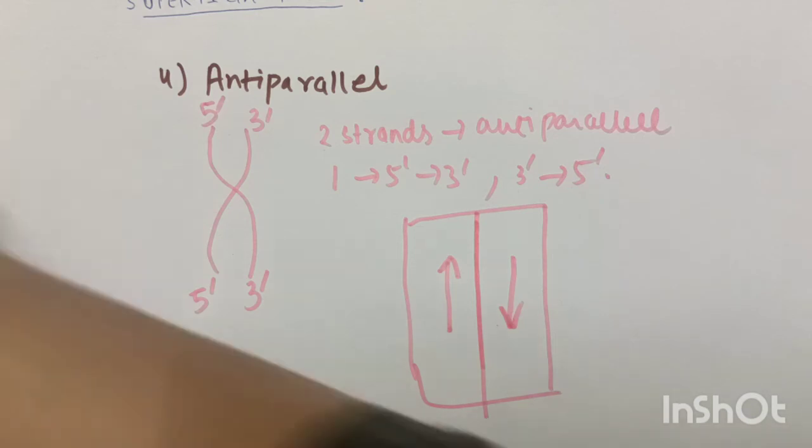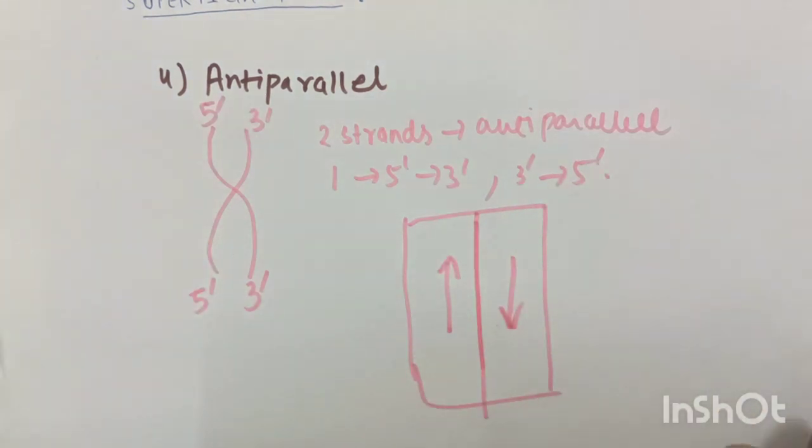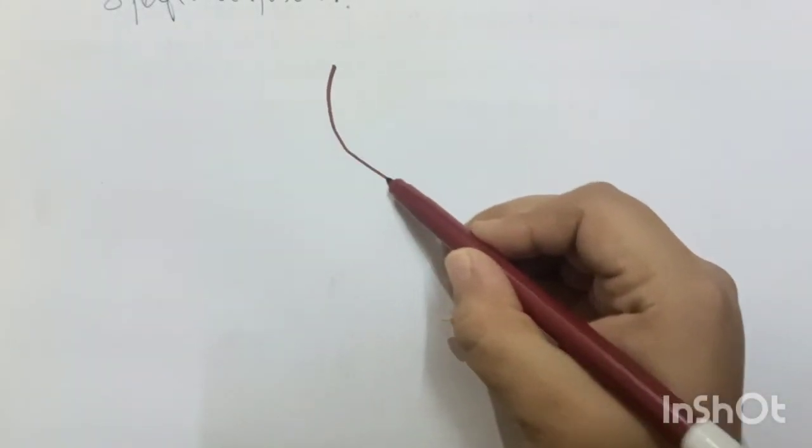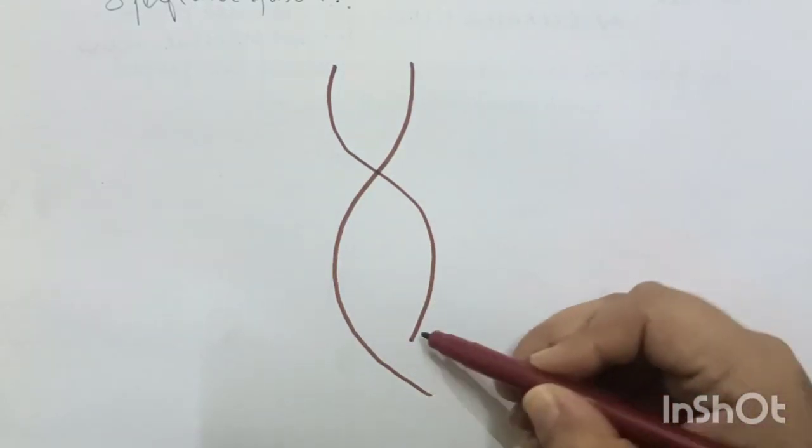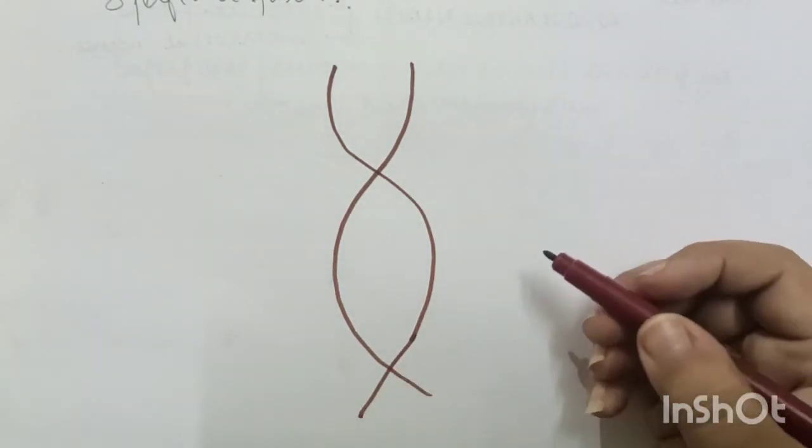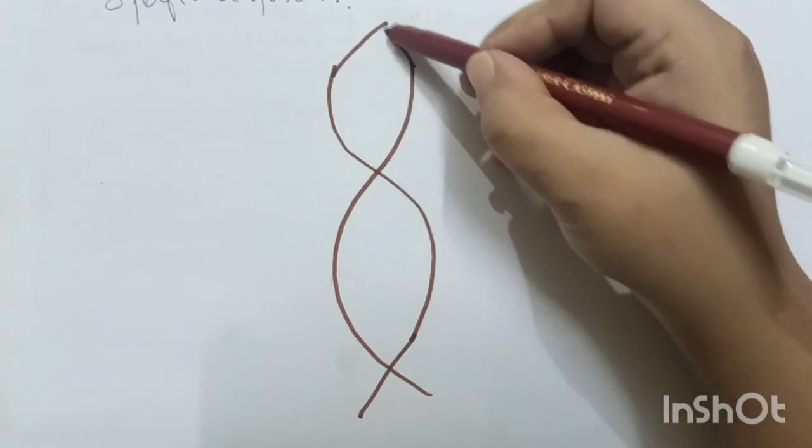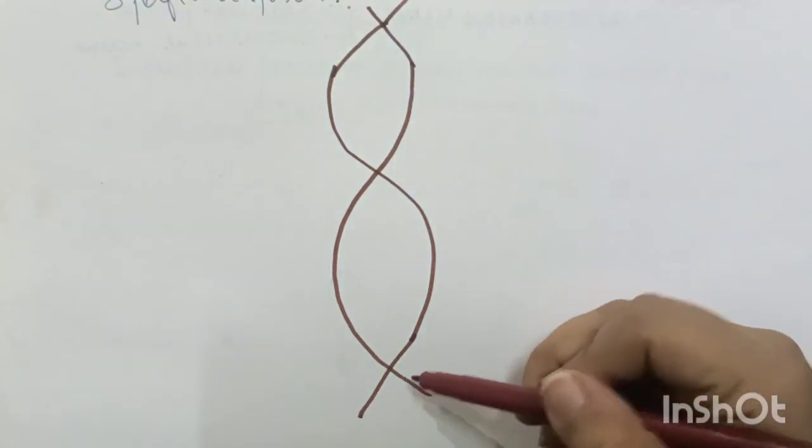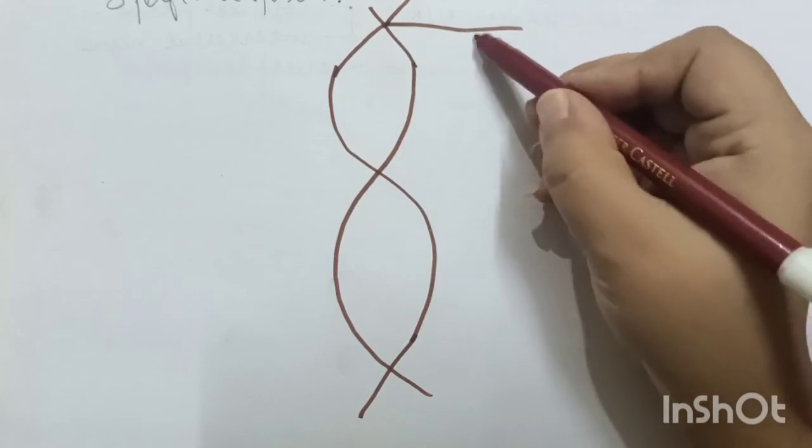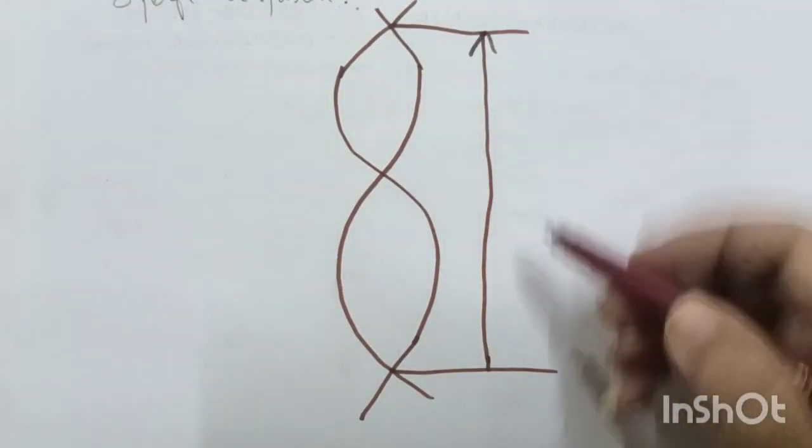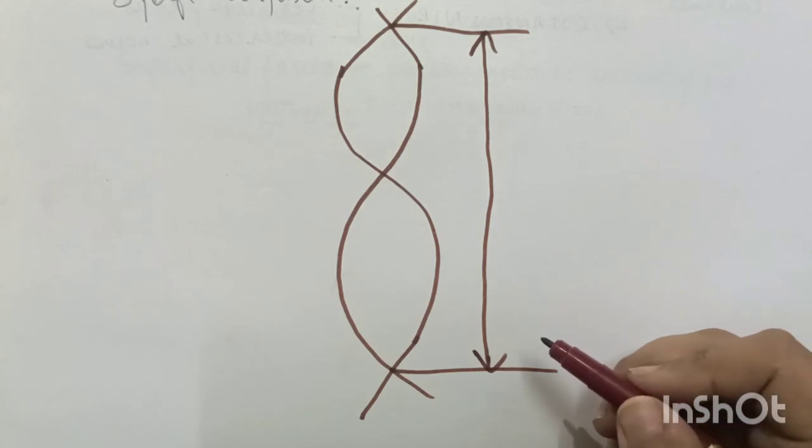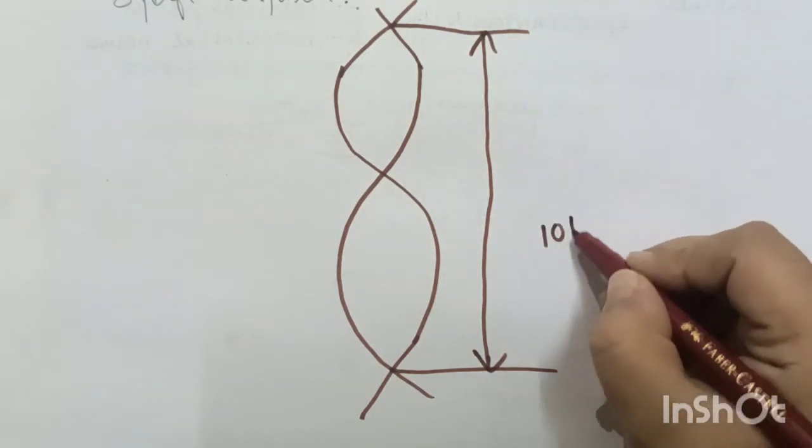There are also some other features. Suppose this is the DNA molecule, this is the DNA strand. This whole is considered as 1 turn. In each turn, there are 10 base pairs.